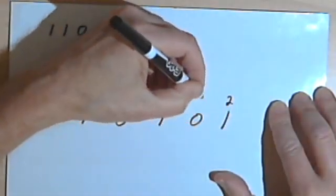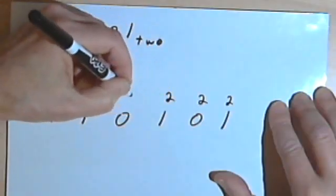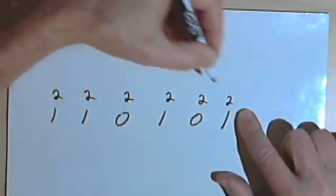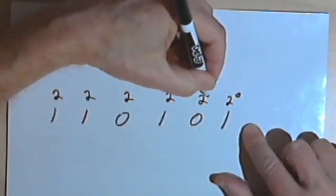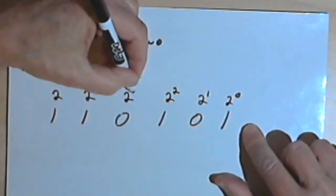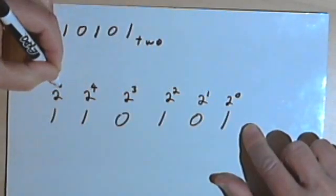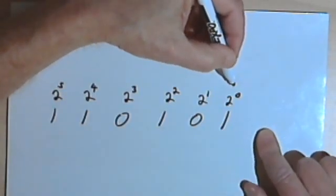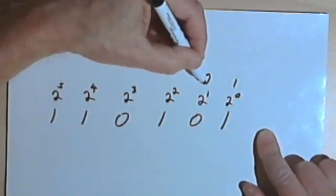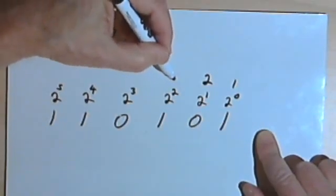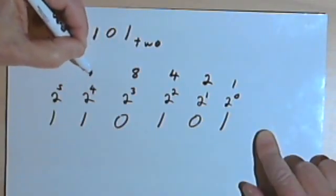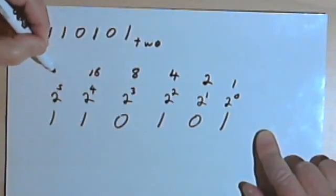And I'll put a little 2 over each one, and we'll figure out what power each one is. So going from the right, we know we're starting with 2 to the 0. Then we have 2 to the 1st, 2nd, 3rd, 4th, and 5th. And again going from the right, 2 to the 0 is just a 1, 2 to the 1st is a 2, then 2 squared is a 4, 2 to the 3rd is 8, 2 to the 4th is 16, and 2 to the 5th is 32.